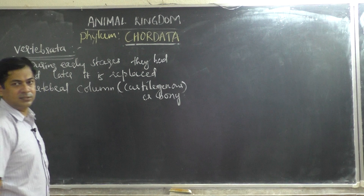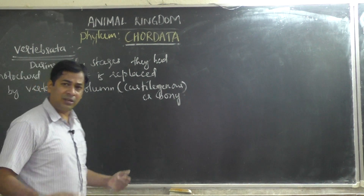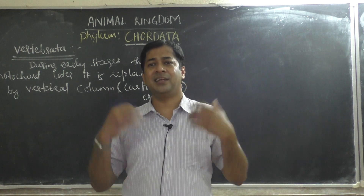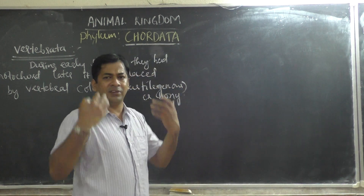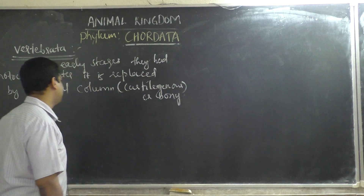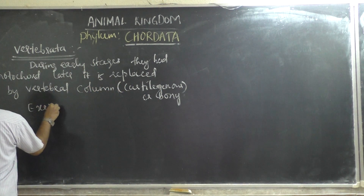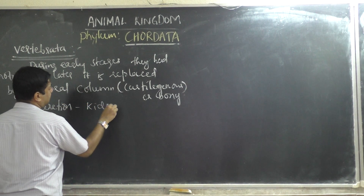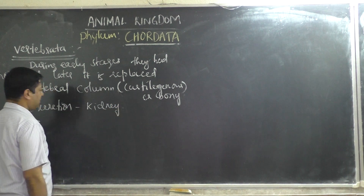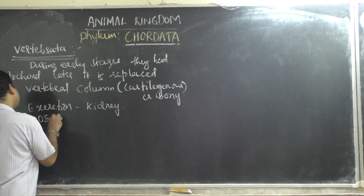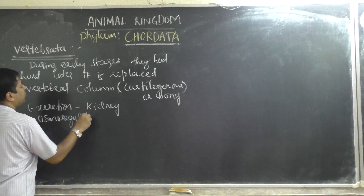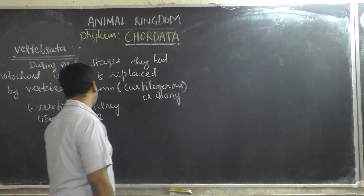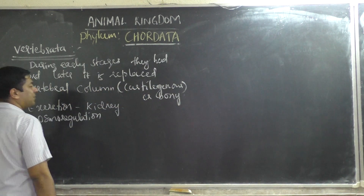Now, what are the other characters of vertebrates? For excretion and osmoregulation, vertebrates have a pair of kidneys. The kidneys are responsible for removing nitrogenous waste material from the body.